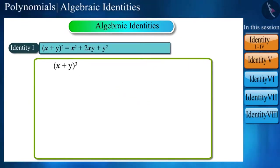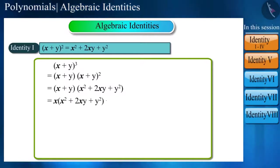So, let's compute x plus y to the power of 3 by applying identity 1. We can write x plus y to the power of 3 like x plus y into x plus y to the power of 2, which becomes x into x square plus 2xy plus y square plus y into x square plus 2xy plus y square.